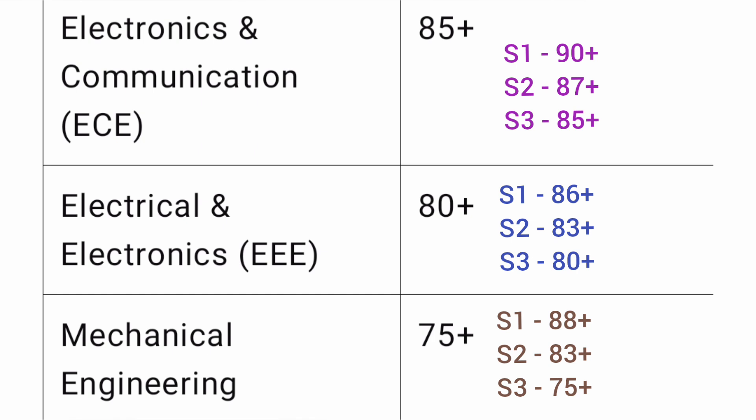For Mechanical Engineering, competition is similarly significant. In slab 1 you should be able to get in at 88 percentile plus, in slab 2 around 83 percentile — similar to EEE — and in slab 3 at 75 percentile plus. These figures are for the main campus covering all branches within it.